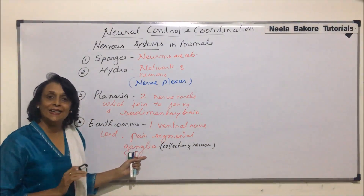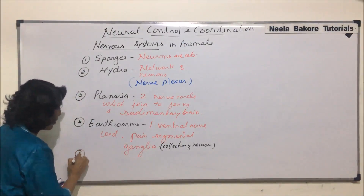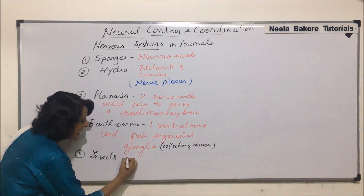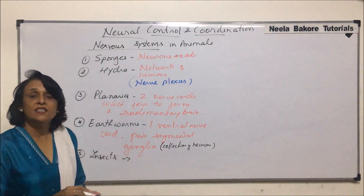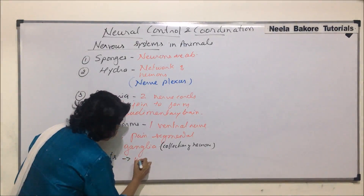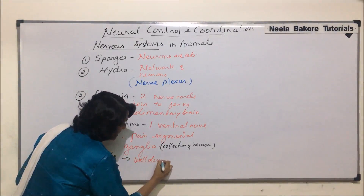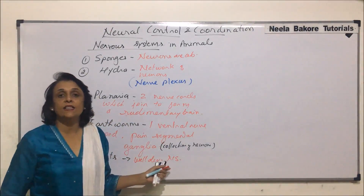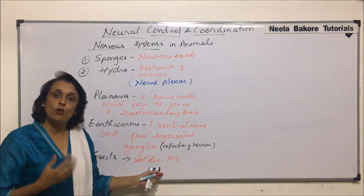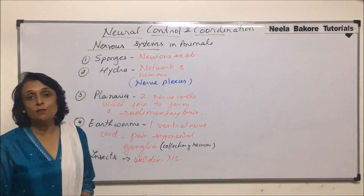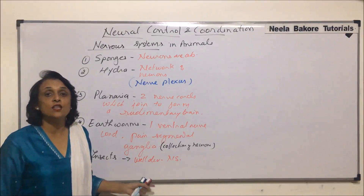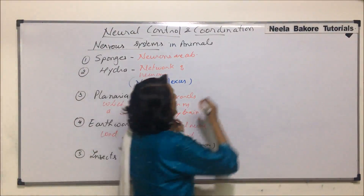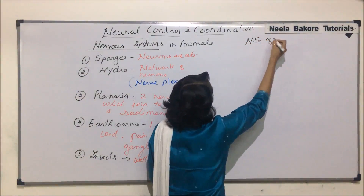The next category is insects. Insects have a well-developed nervous system, and amongst invertebrates they have the most developed nervous system. We will be talking about the nervous system in the case of cockroach to understand this well-developed nervous system.